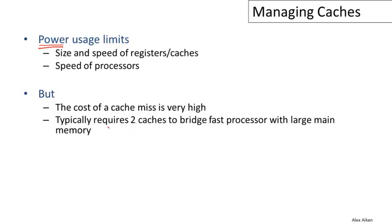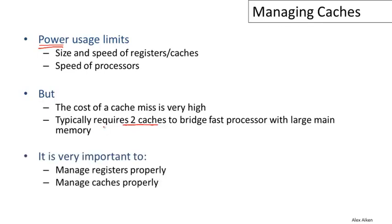Typically, it requires more than one level of cache these days to match a fast processor well with the speed of a very large main memory. Very common now to have two levels of cache in processors, and some processors even have three levels of cache.